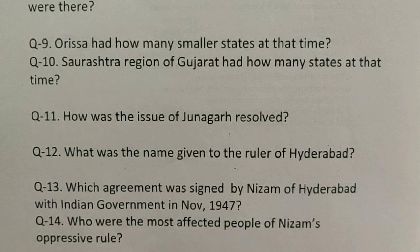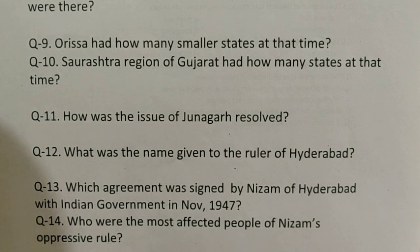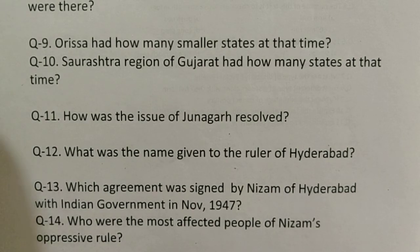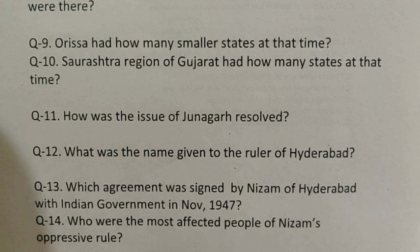Question number thirteen: Which agreement was signed by the Nizam of Hyderabad with the Indian government in November 1947? The right answer is the Standstill Agreement. Question number fourteen: Who were the most affected people of Nizam's oppressive rule? The answer relates to the people of Telangana — specifically the poor farmers there who were in a very bad condition.